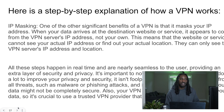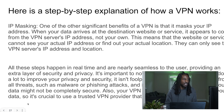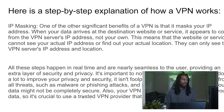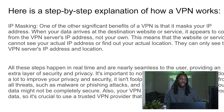You don't always have to be a super secret hacker to use VPN services. Regular people use VPN services to watch movies available in other parts of the world. IP masking is a big part of what a VPN is — when your data arrives at a destination website, it appears to come from the VPN server's IP address, not your own. This means the website cannot see your actual IP address or location. Most VPN services allow you to change where your IP appears to come from — you could be in America and say your IP is coming from Russia. All these steps happen in real time and are nearly seamless to the user, providing an extra layer of security and privacy.